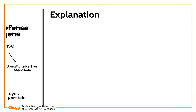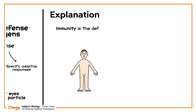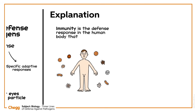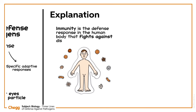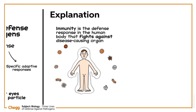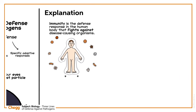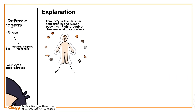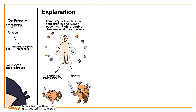First, we'll discuss immunity. Immunity is the defense response in the human body that fights against disease-causing organisms, which are of two types: non-specific innate immunity, and specific acquired immunity.